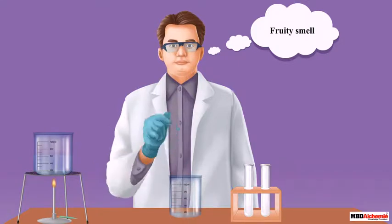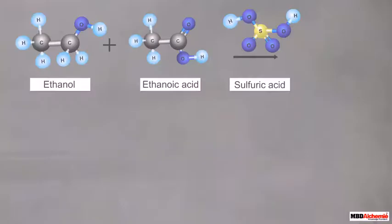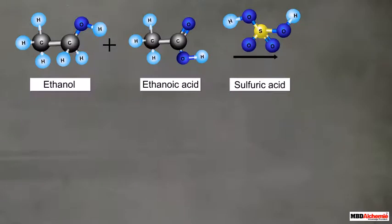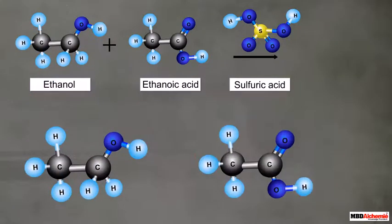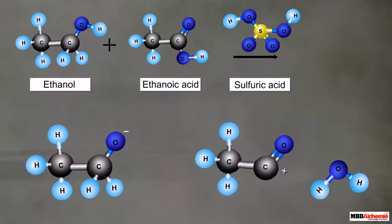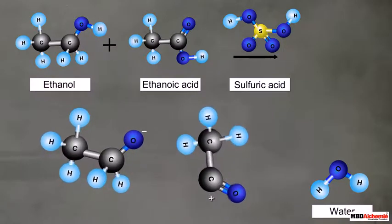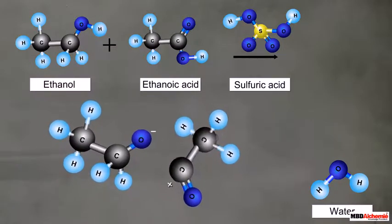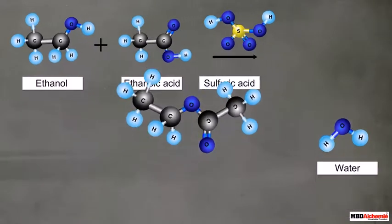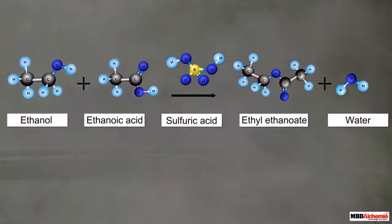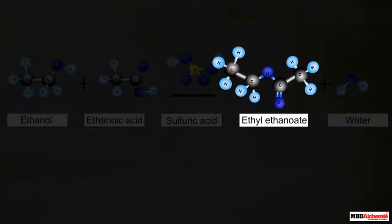This fruity smell is produced because of the chemical reaction of ethanoic acid in the presence of concentrated sulfuric acid. The hydrogen of the alcohol and the hydroxyl from the carboxylic acid are lost, which together form a water molecule. The remaining part of the two compounds bond together, giving rise to a new carbon compound, ethyl ethanoate.